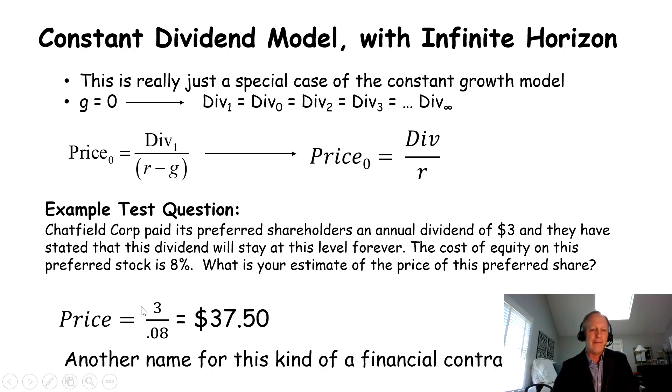$3, $37.50. Another name for this is a perpetuity. Perpetual. It's always going to pay $3 forever. Not a lot of these perpetuities that exist out there, but there are some that exist. And so, pretty interesting types of contracts.